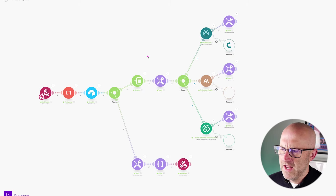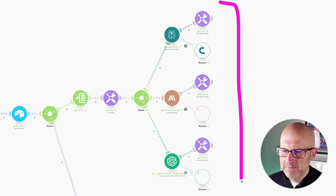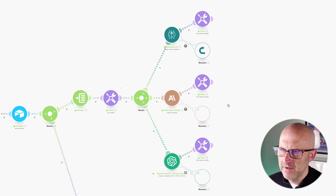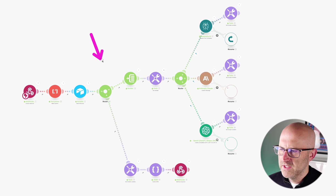With this automation I'm going to show you, you can actually send the same prompt to multiple platforms like Perplexity, Claude, and ChatGPT and pick the response you want to use — or use Claude or Perplexity as a backup in case OpenAI ChatGPT goes down, just like it did back in June where it was down for almost the entire day.